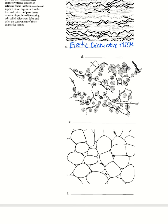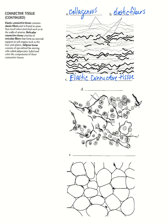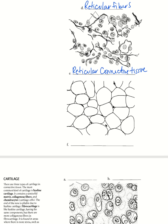We also have what's called reticular tissue. This is more common in your internal organs — things that are spongy like the liver. Here we have reticular fibers that make up reticular connective tissue. And probably our most simple type of connective tissue is our adipose tissue — this is simply fat.